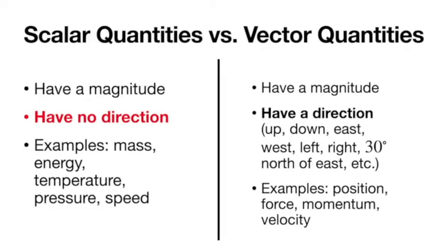So far we've only been talking about scalar quantities. A scalar is just something with a magnitude and maybe units — they have no direction. So something like mass, energy, temperature, pressure, speed. If something's 5 kilograms, it's 5 kilograms. There's no such thing as 5 kilograms up or down east — direction is not necessary. Same thing with energy: if I have 4 joules, there's 4 joules, it has no direction.